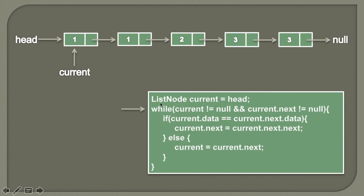We will iterate based on the condition that current should not be null and current.next should not be null. If the current node reaches the last node, then current.next will be null, meaning there are no more nodes to traverse, so that condition is required.